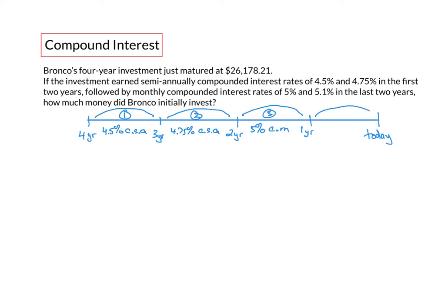And in year four, it was earning 5.1% compounded monthly. The initial investment would have been considered the present value of the investment four years ago, and its maturity value would be considered the future value of that investment four years ago.